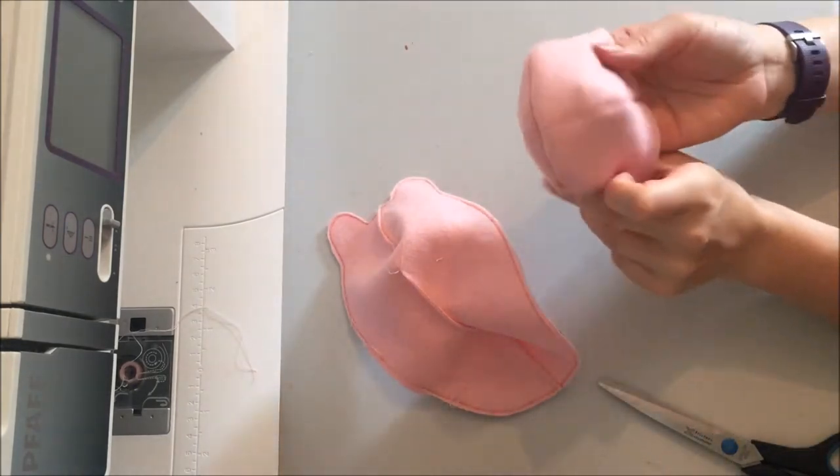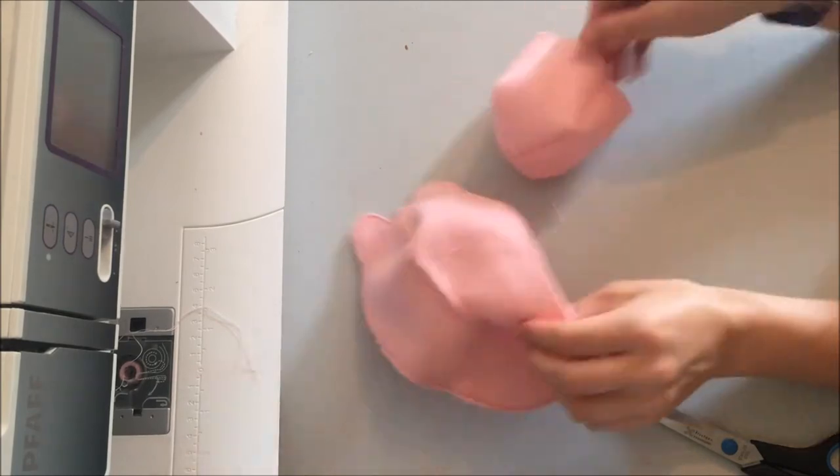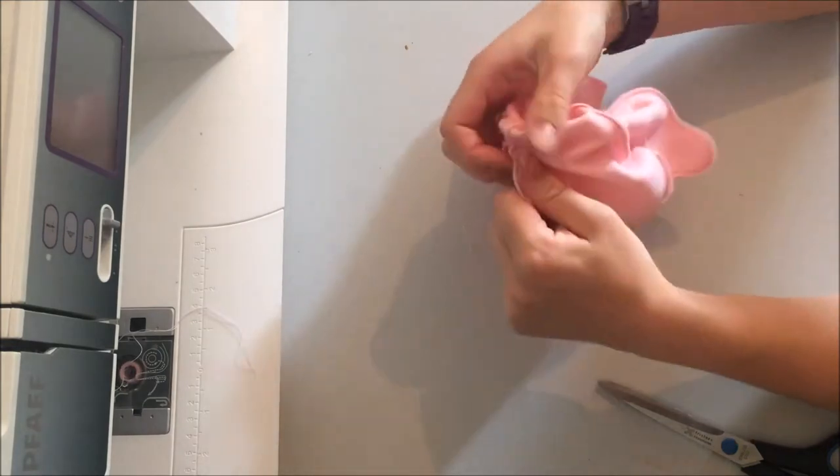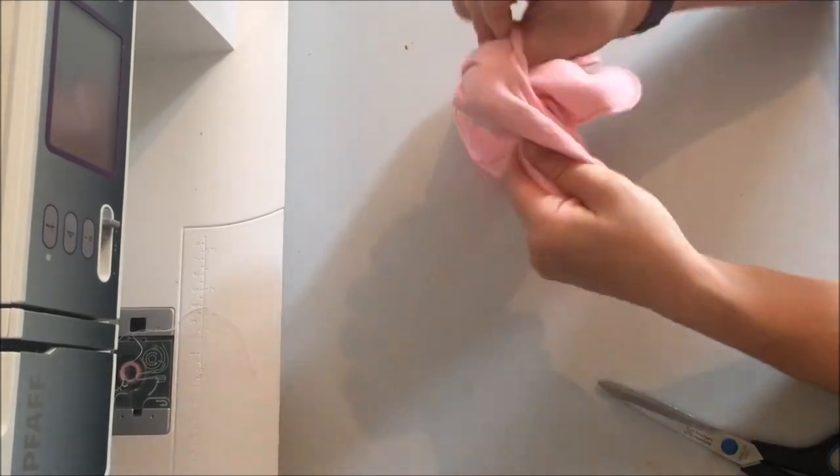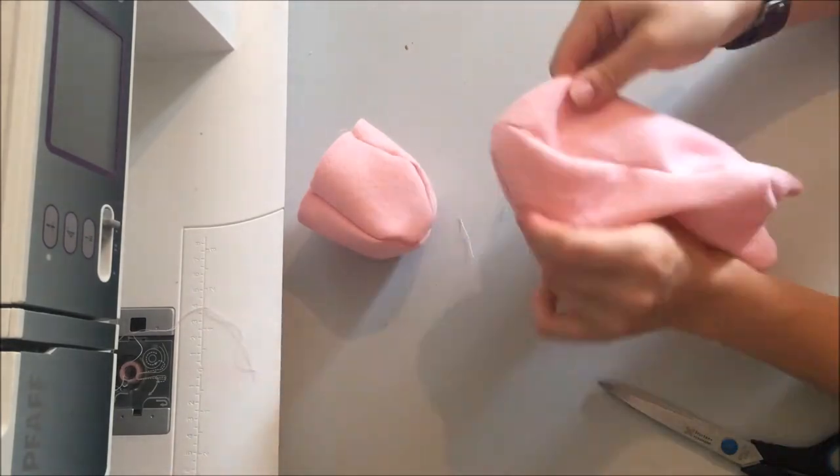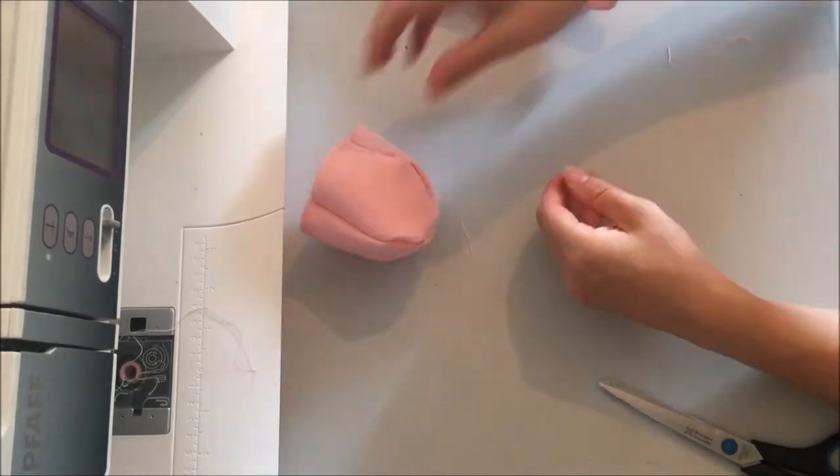So I just neatened all the seams, turn the hood around, same with the body, and I've left a big enough gap that I can do this by hand, if not you can use pliers.